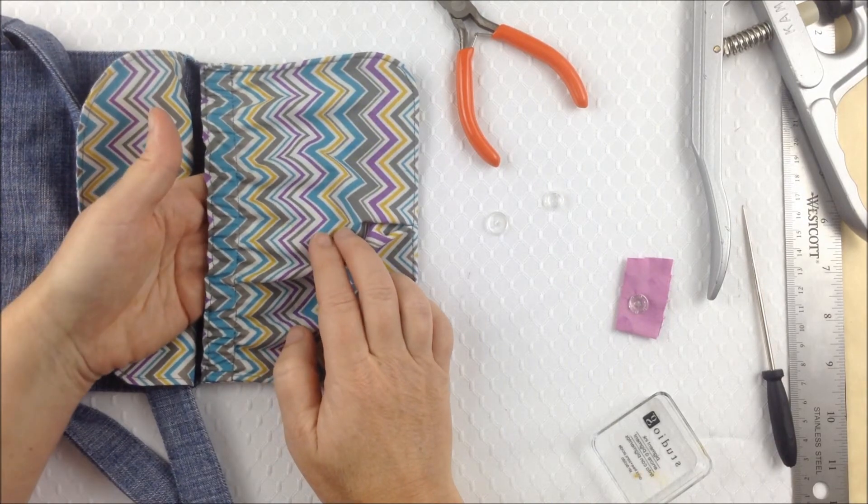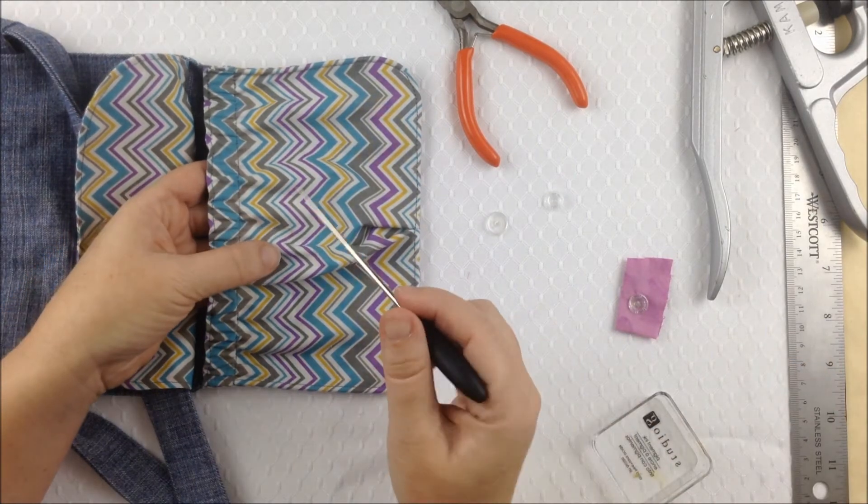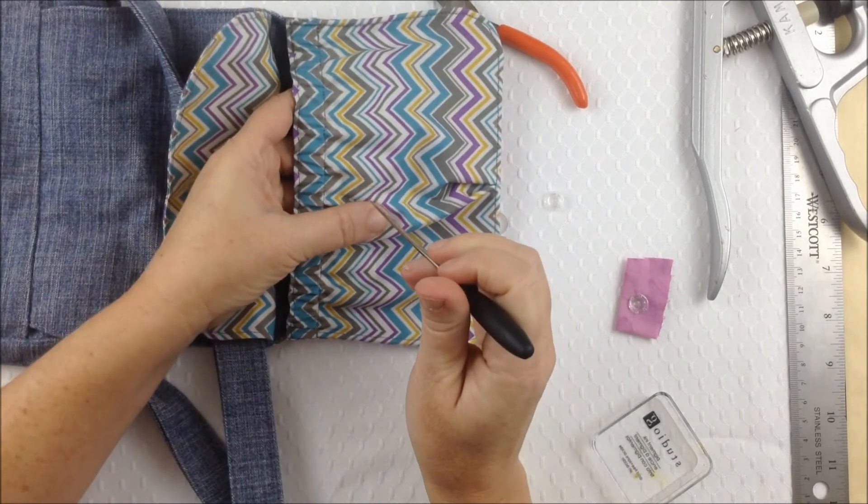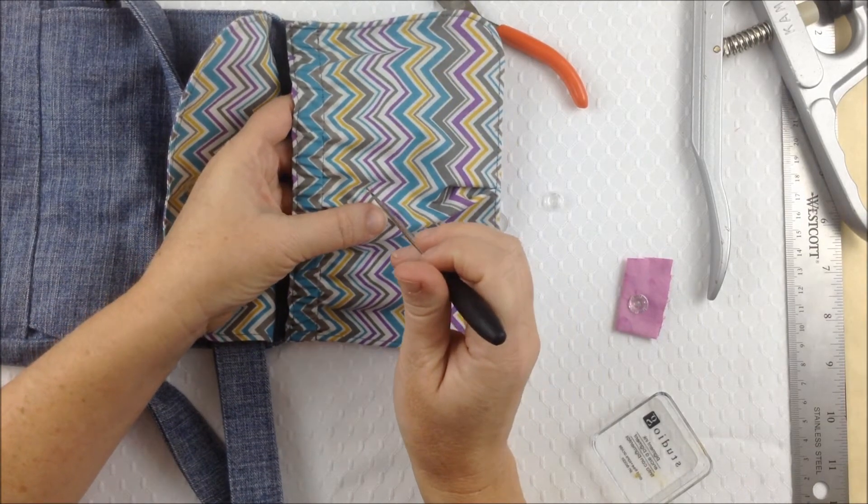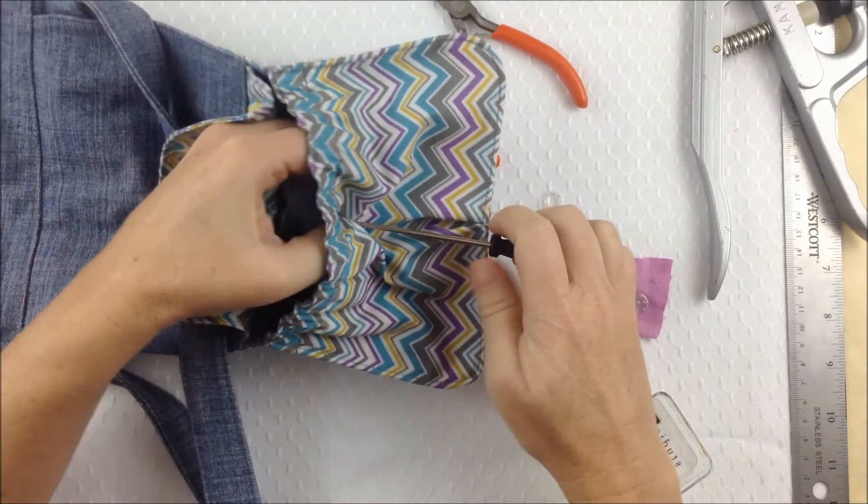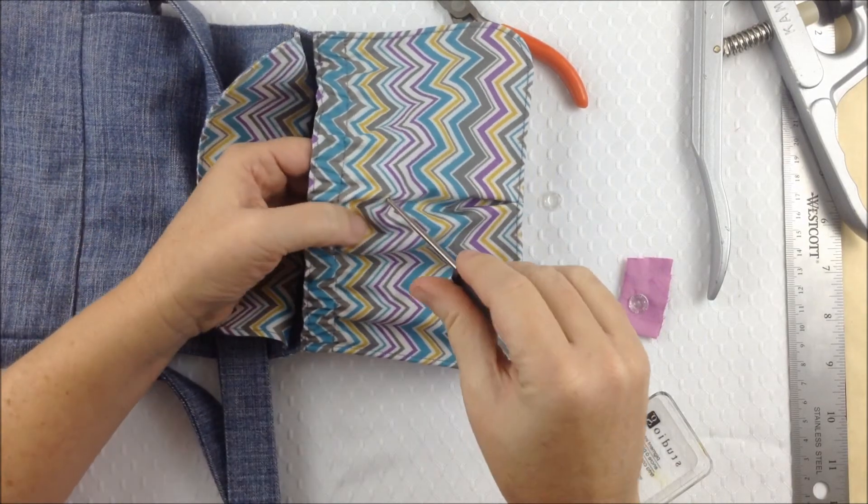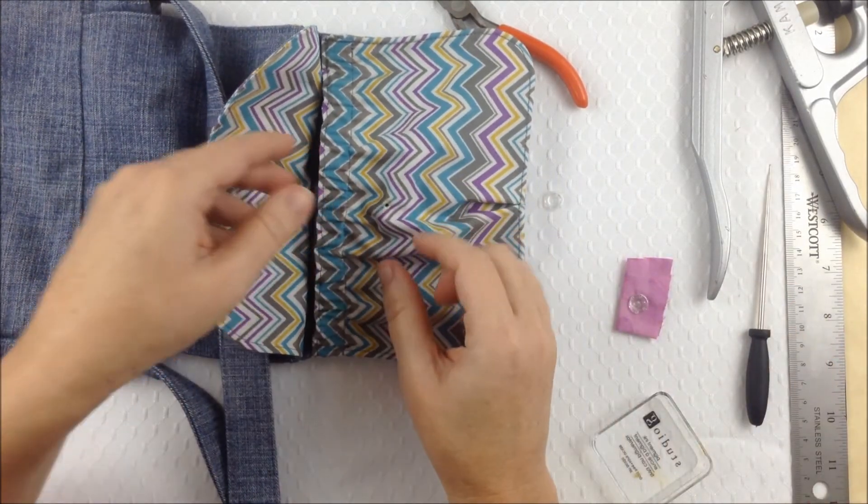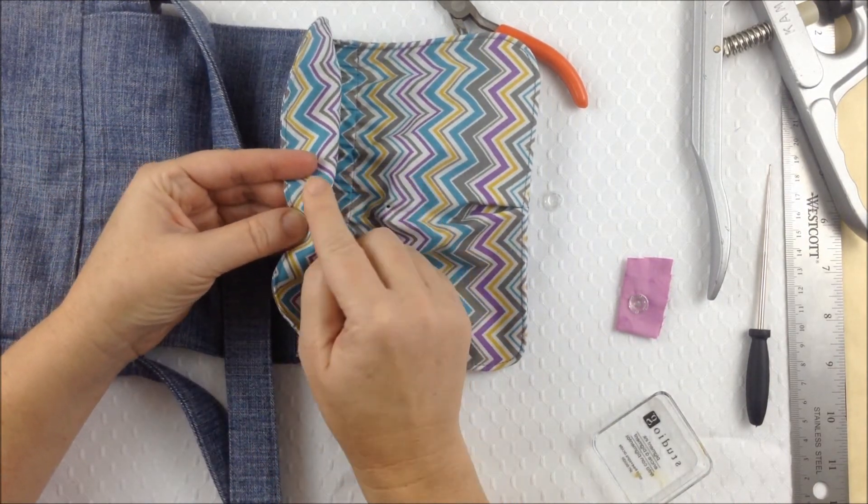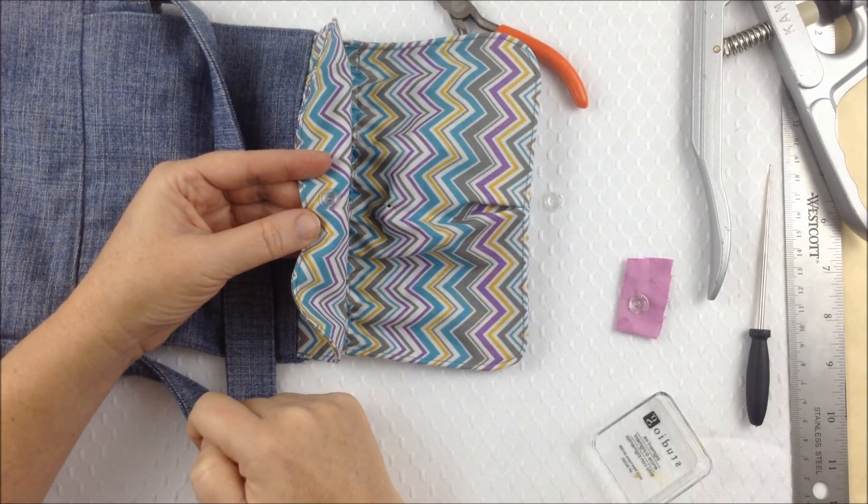So now put your hand underneath that so you don't accidentally poke through to the other side of the flap. And in the centre of that ring, just put your pointed tool through there. Again, making sure you don't go through the flap. You can see it's coming out the other side there. So we'll take that out. Now we've got this marked. The pigment ink just wipes off the snap because it's plastic and the ink doesn't stick to it.